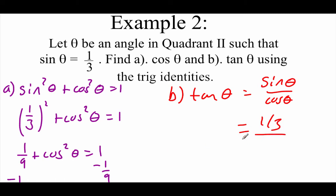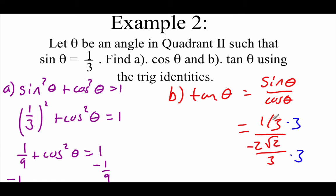We have both of those values. We know that the sine is 1/3. We just found the cosine and said that it was negative 2√2 all over 3. But now we're going to have to simplify this down because we've got small fractions inside of big fractions. Each one of these fractions has a divided by 3.